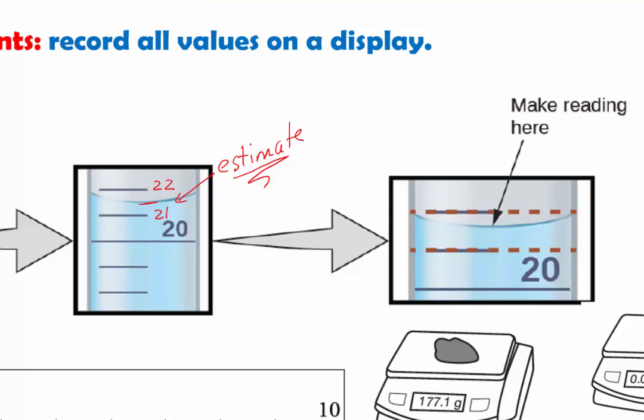That is why when you look at significant digits, you will see that all the digits are certain, except for one last one will be estimated.